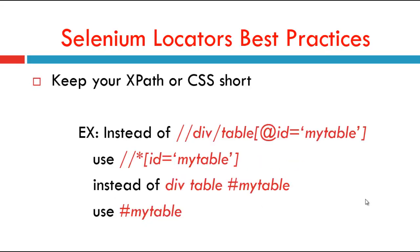Always keep your XPath or CSS short. Instead of using double forward slash div slash table with at-rate id equal to 'my-table', use double forward slash star with id equal to 'my-table'. Similarly in CSS, instead of 'div table.my-table', use '.my-table' only.